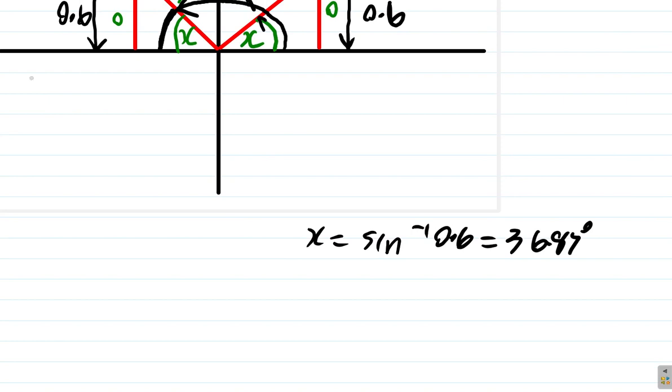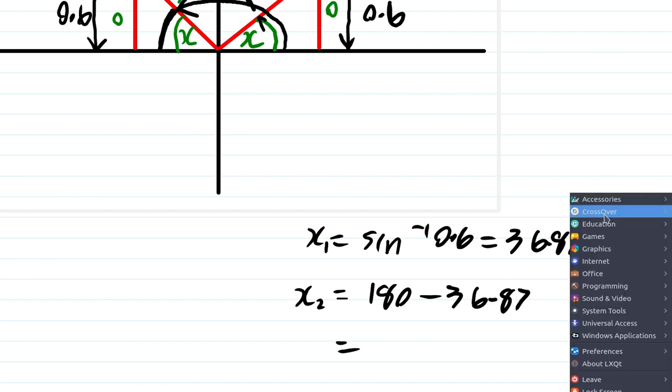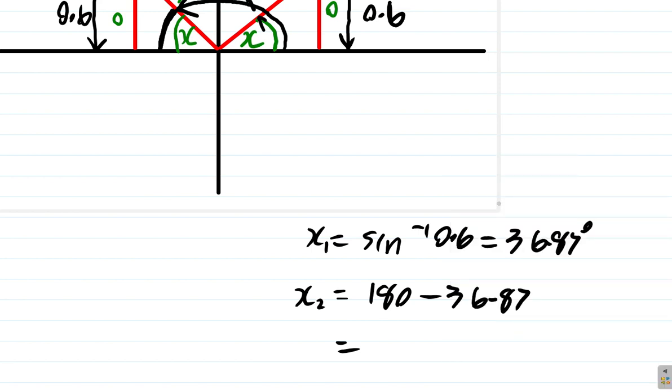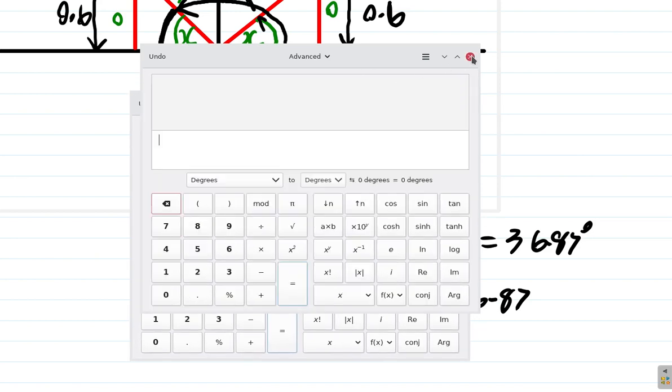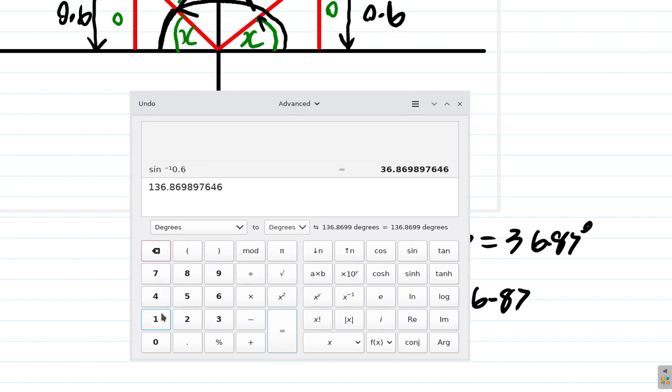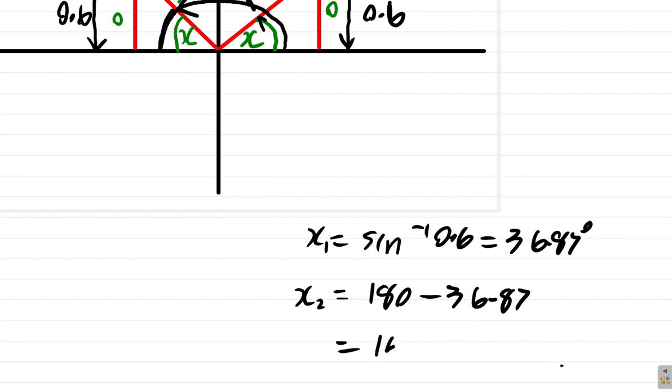So, the next angle, first of all the first angle is from 0 to here. The next angle is from 0 to here. But, to find this angle we have to go all the way to 180 then we subtract the 36 degrees. So, x, call this x1, x2, the other angle is 180 minus 36.87 degrees. So, it's 180 minus that equals 143.13 degrees.